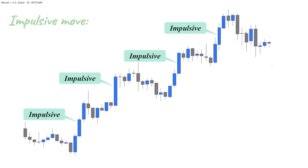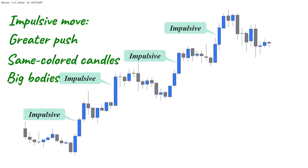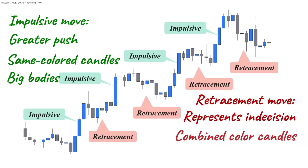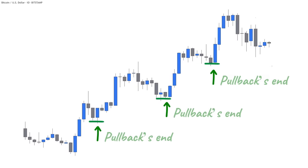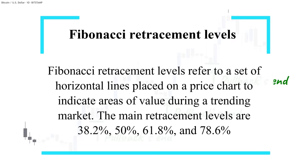Impulsive waves often push the price to a greater distance with momentum and they have same-colored candles with big bodies. On the contrary, retracements represent a form of indecision on the chart with combined color candles with small bodies and sideways wicks. Identifying the end of a pullback and the start of an impulsive move could be highly profitable, and this is where Fibonacci retracement levels come into play.